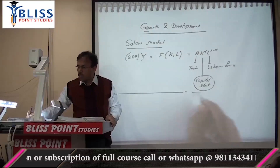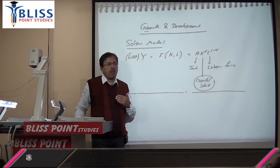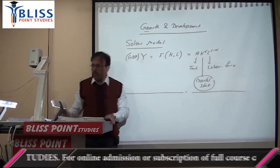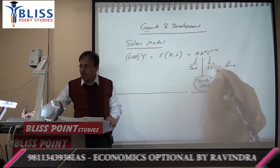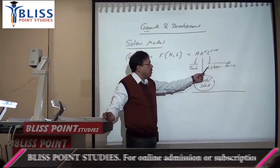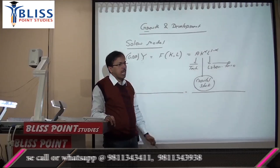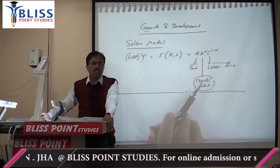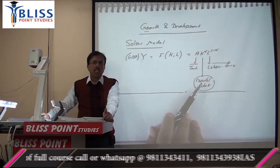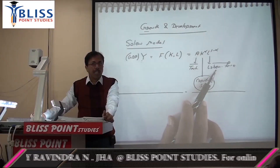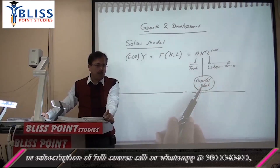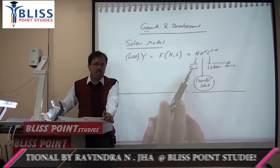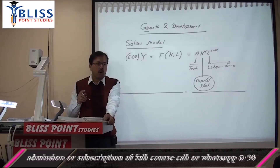There are various steps in which the Solow model is built. In step one, technology and labor force are held constant, so GDP changes only due to capital stock. In step two, labor force also becomes variable, so GDP changes due to capital or labor. In step three, technology also becomes variable, so GDP changes due to technology, capital, or labor, or all factors together.